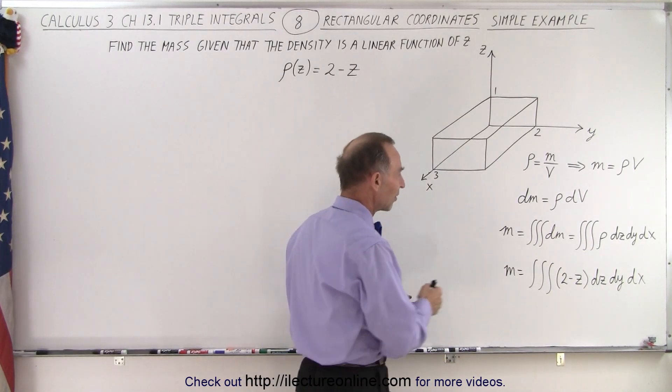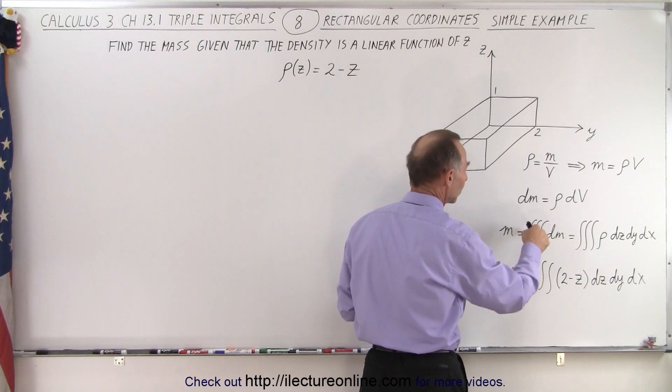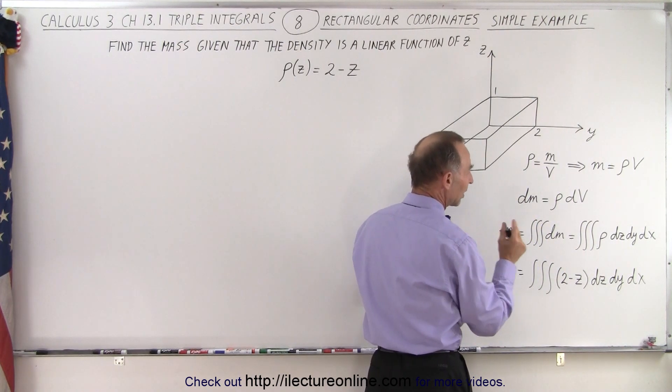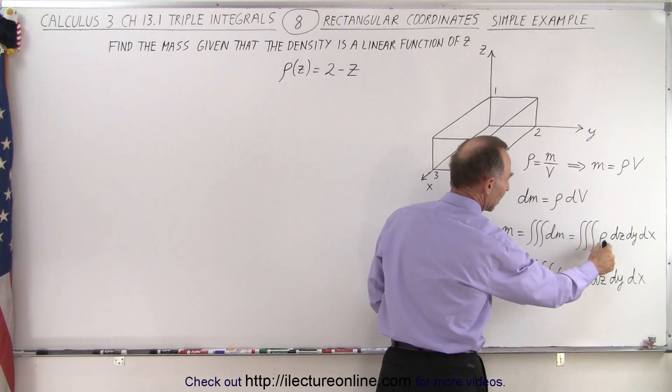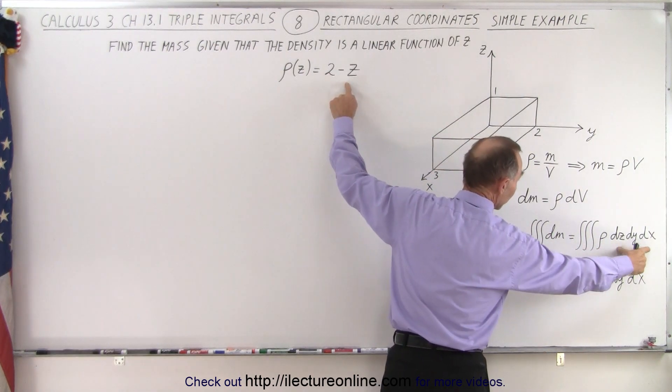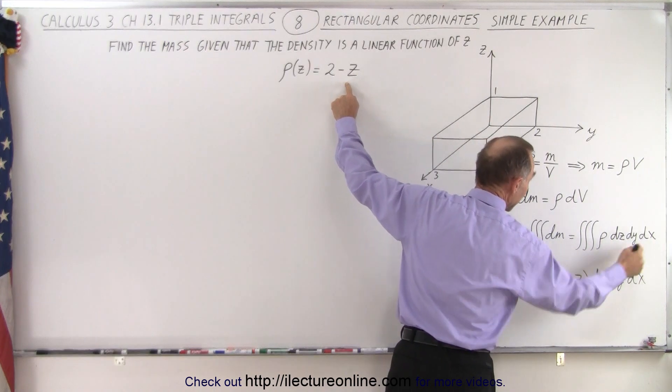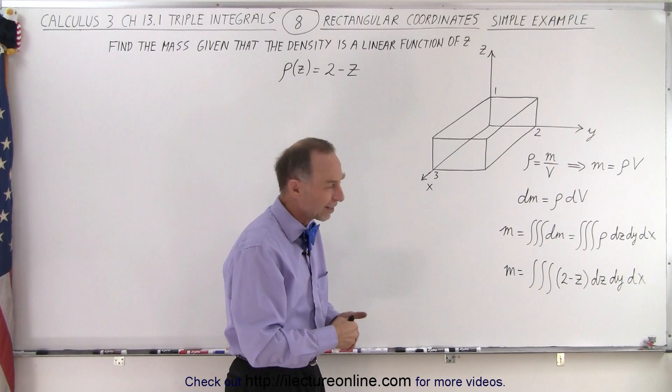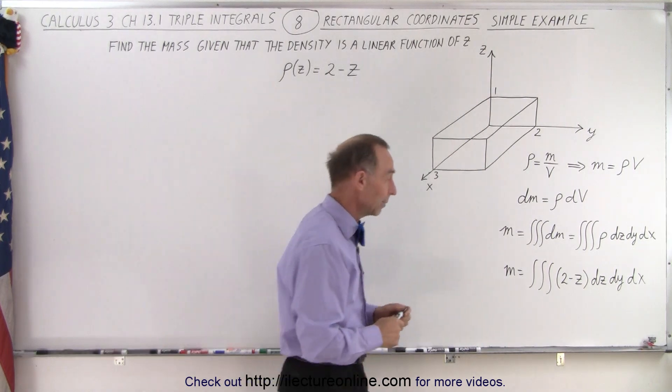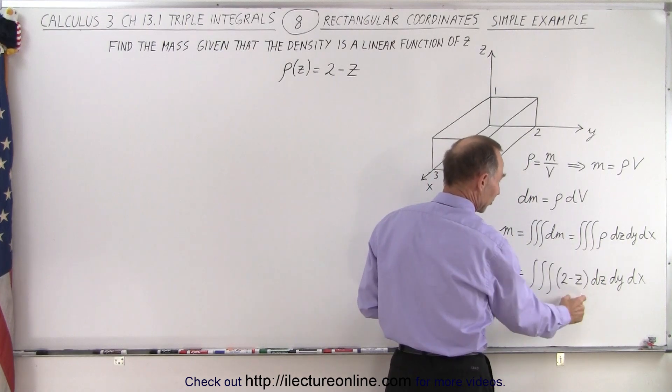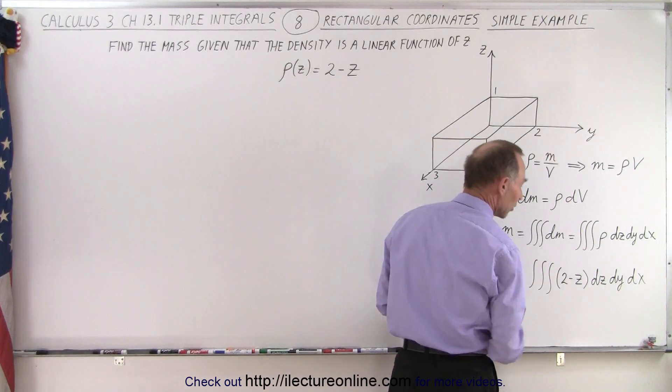So if we then want to find the mass, we're going to have to integrate over all those small little dm's. And notice that in this case, dm is the density function, which is 2 minus z, times the volume element dz dy dx. And we're going to try to integrate z first, then y, then x. But in this case, it really wouldn't matter which order we do it in. And so we replace the density function by 2 minus z. So this is going to be our triple integral.